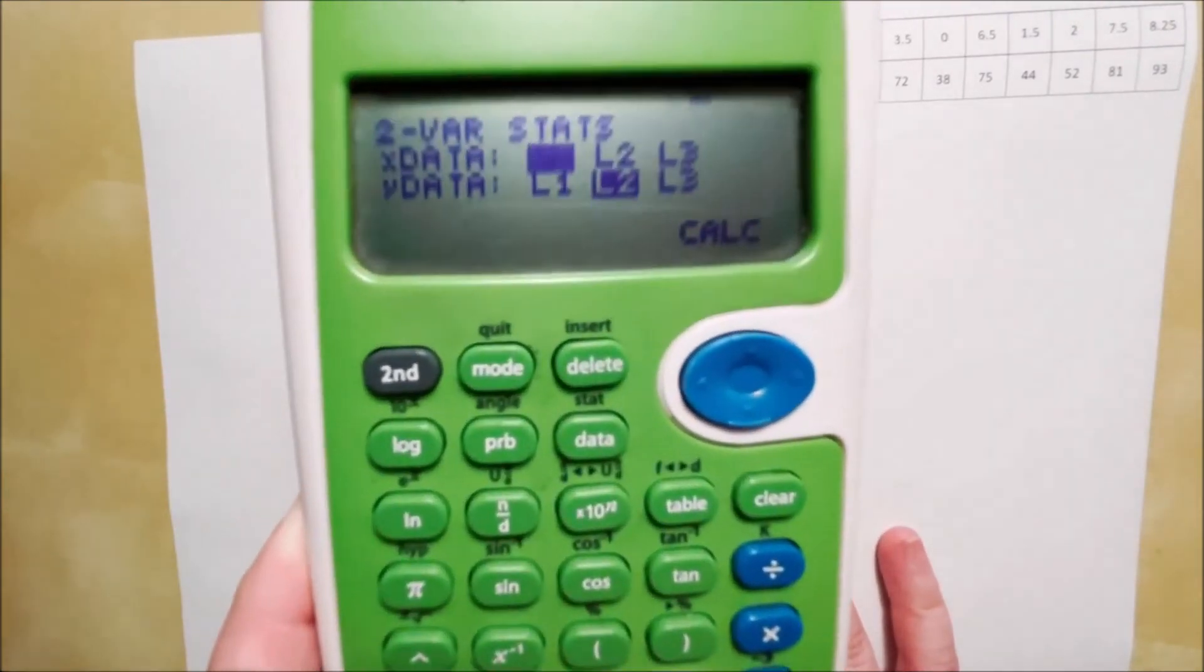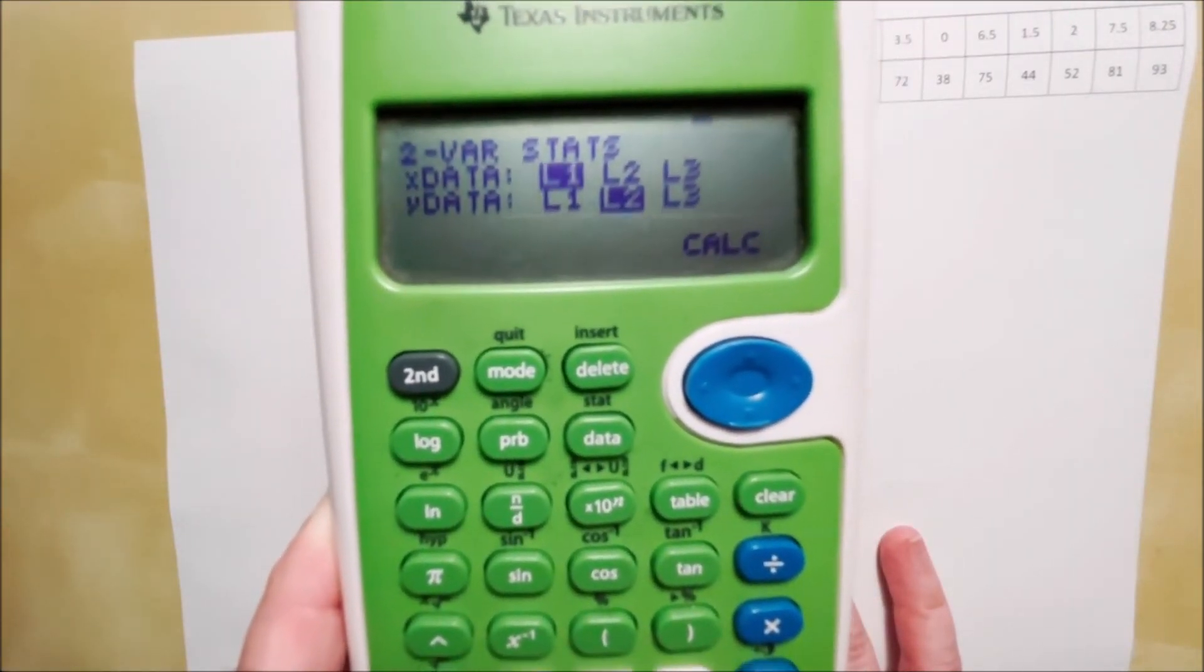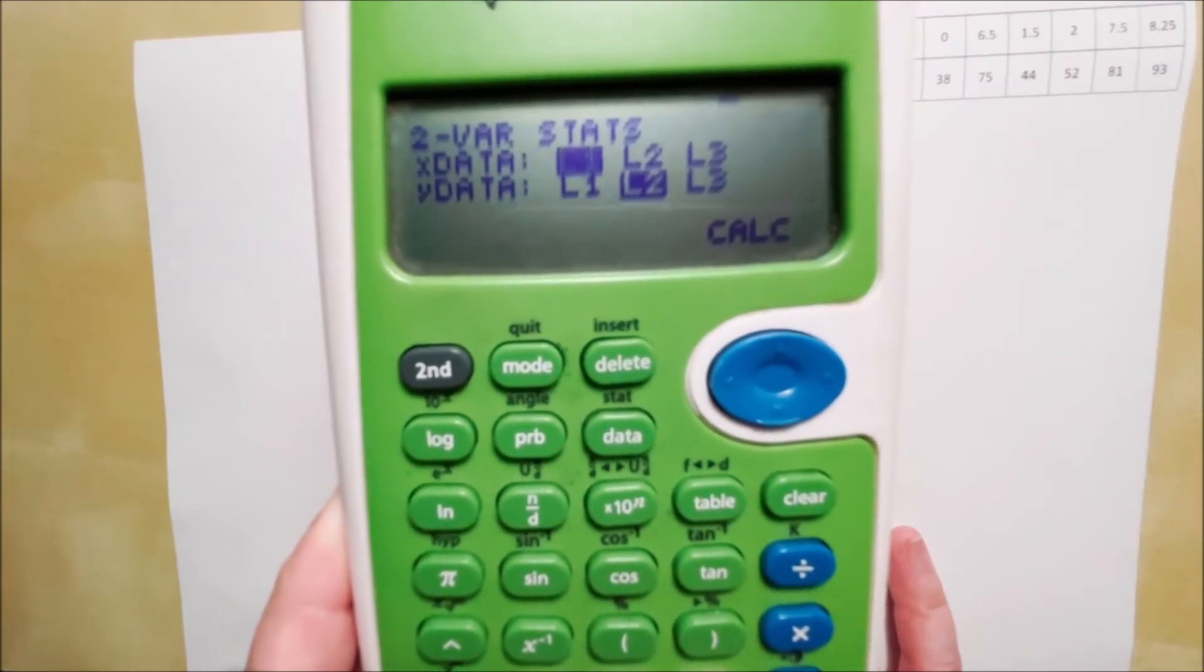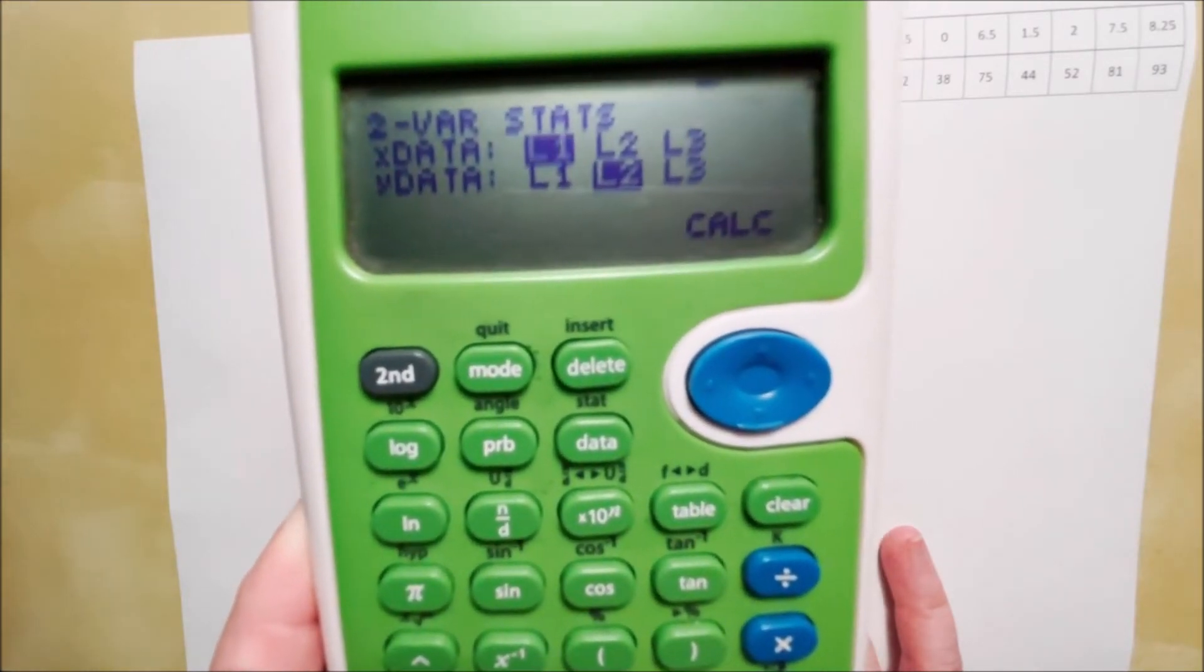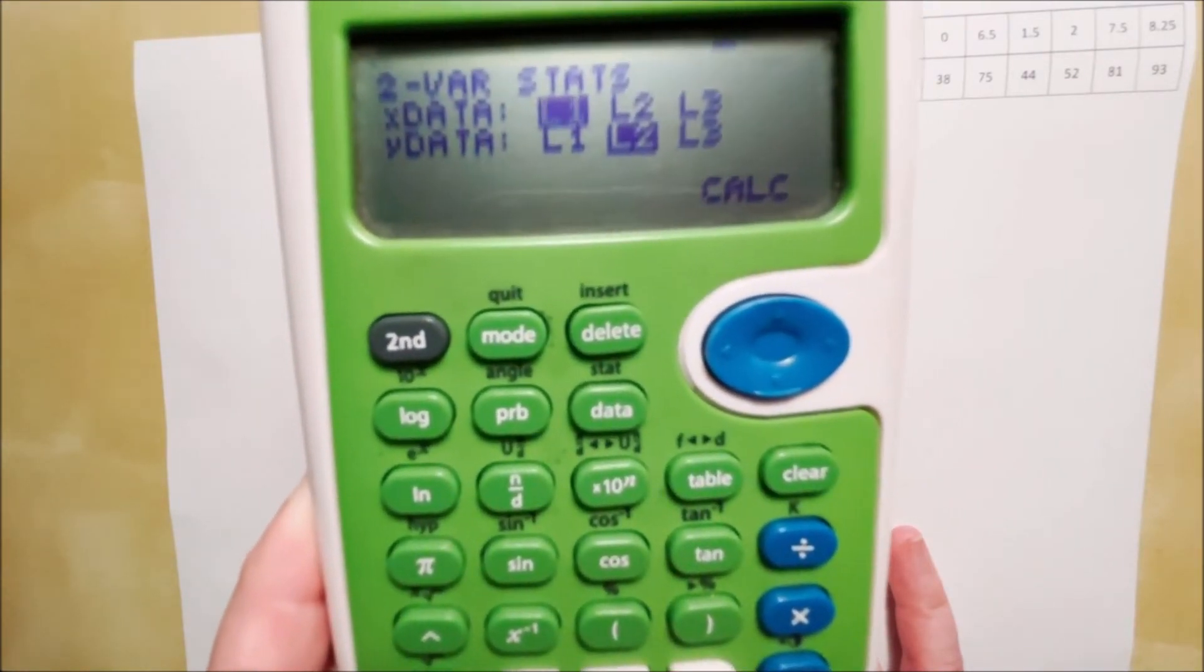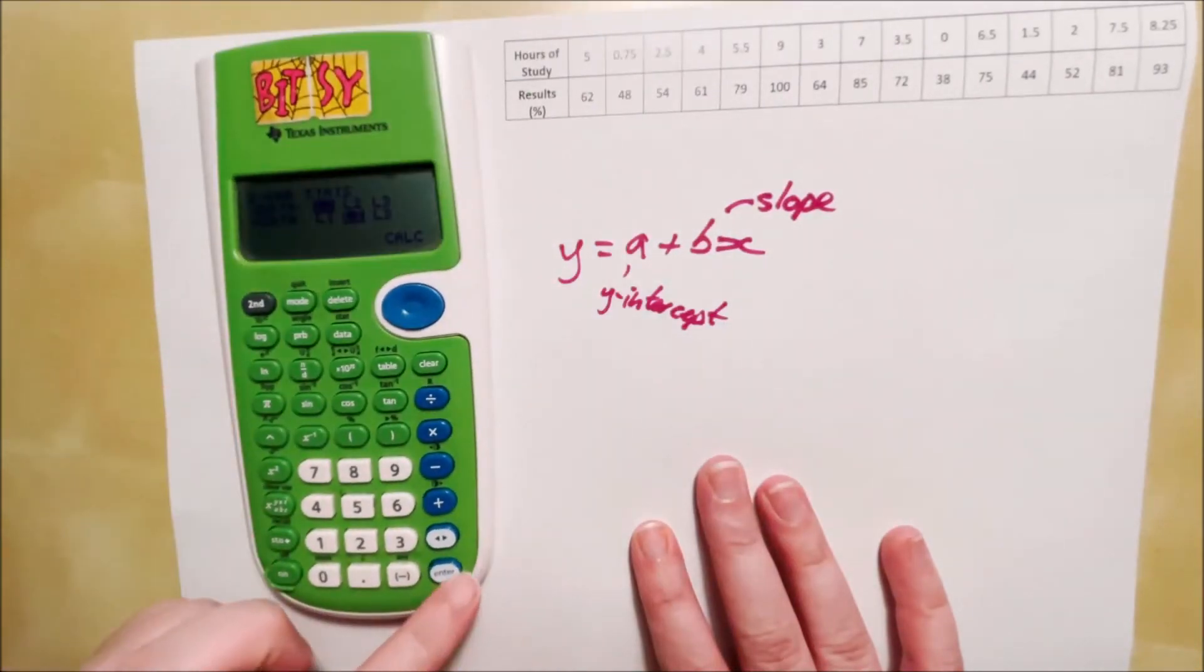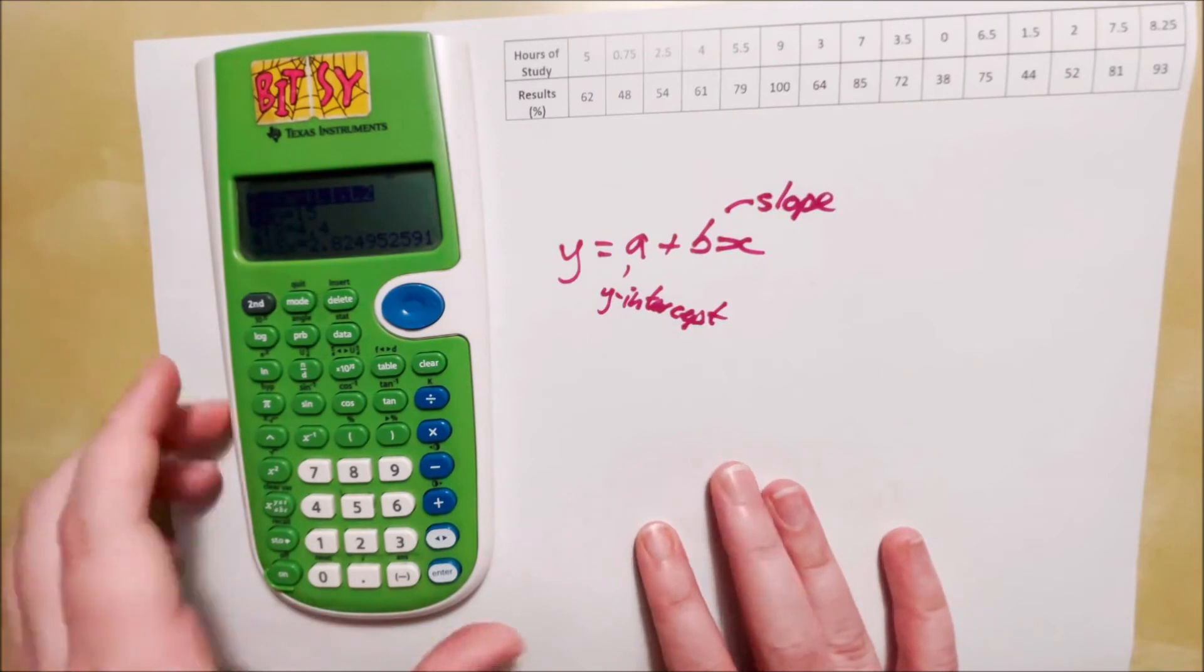And this is where you make sure that the x, or the explanatory variable, matches up with L1, column one, and that the y matches up with column two. So make sure it's set up like that. And then press enter until you get to calculate.